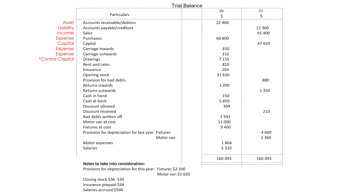Rent and rates — expense. Insurance — expense. Opening stock — asset. Provision for bad debts — contra asset.